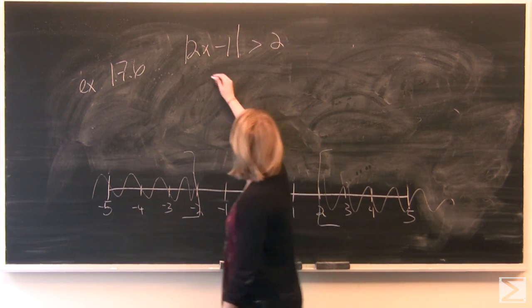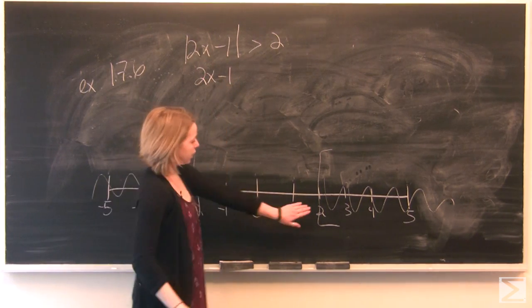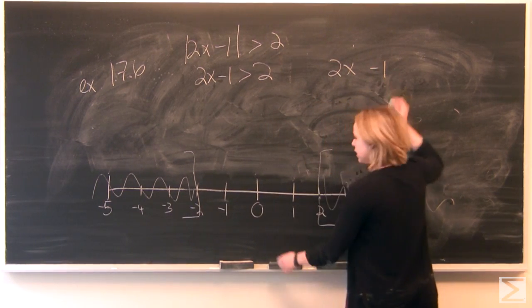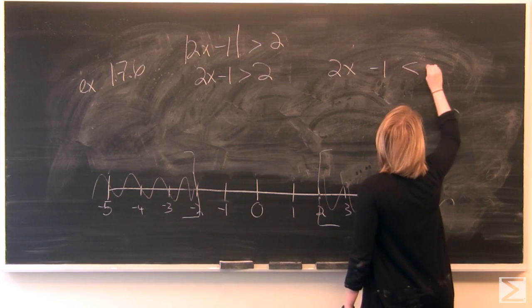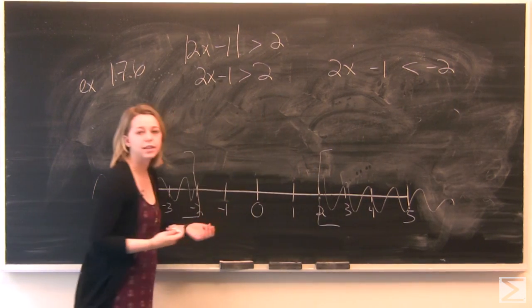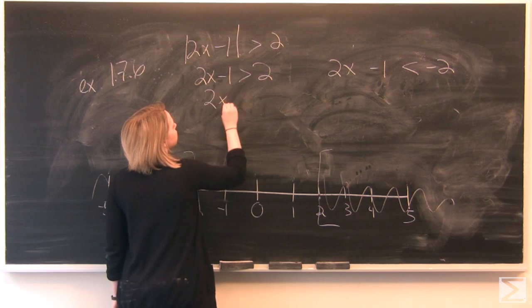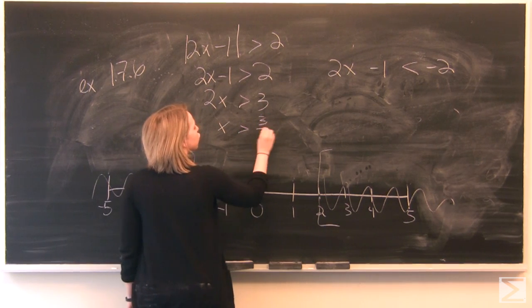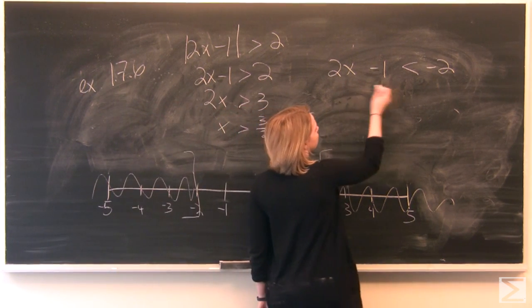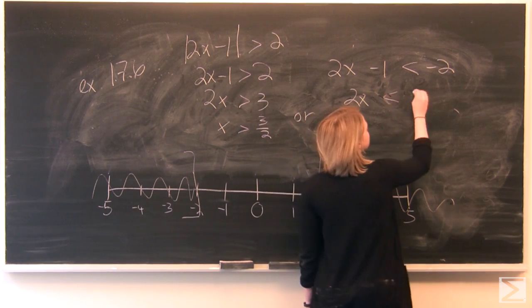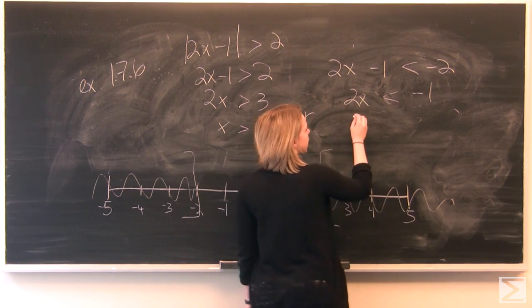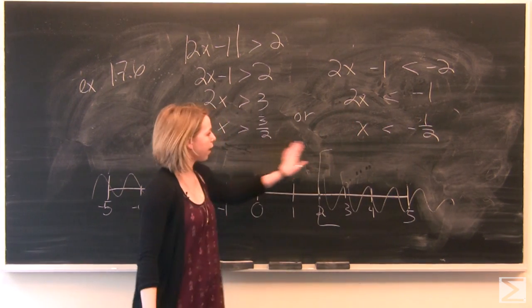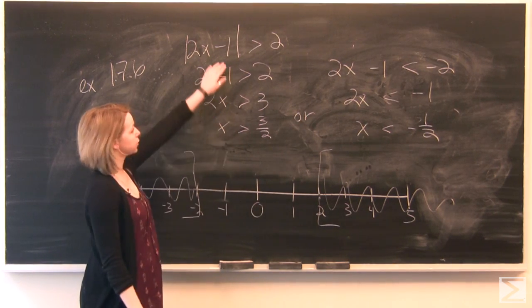Using this guideline, we need 2x minus 1 greater than 2, or 2x minus 1 less than negative 2. Solving the first: 2x is greater than 3, so x is greater than 3 halves. For the second: adding 1 to both sides gives 2x less than negative 1, so x is less than negative one half. Those are our two x value ranges that solve this inequality.